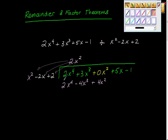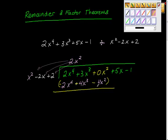Now we're going to subtract this — we're just going to add the opposite. So that makes this negative, that makes this positive, and that makes this negative. If you didn't put in this 0x squared, you'd have this 5x over top of this 4x squared, and it might cause some confusion. So hopefully we averted that confusion. This is 7x cubed, isn't it? Minus 4x squared. And then we divide, we multiply, we subtract, we bring down — so we're going to bring this 5x down, so plus 5x.